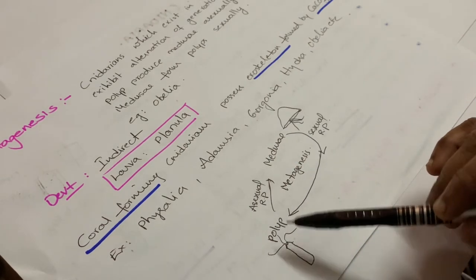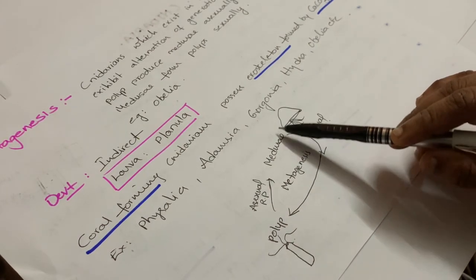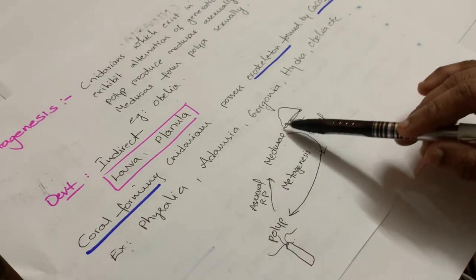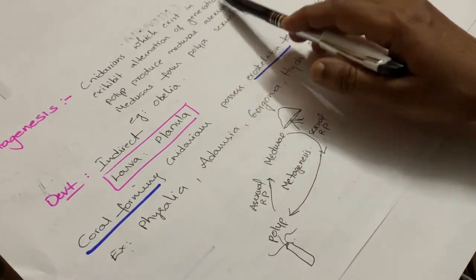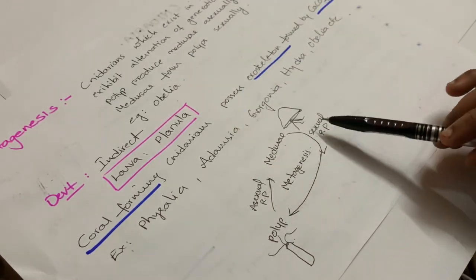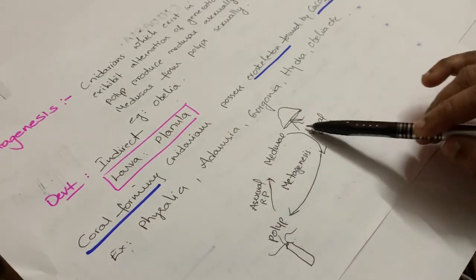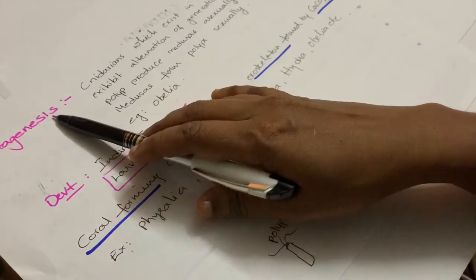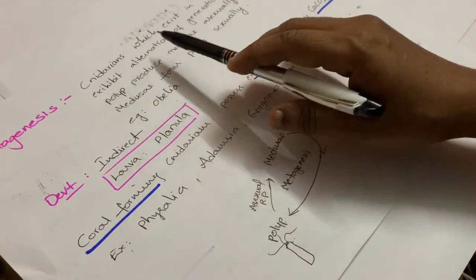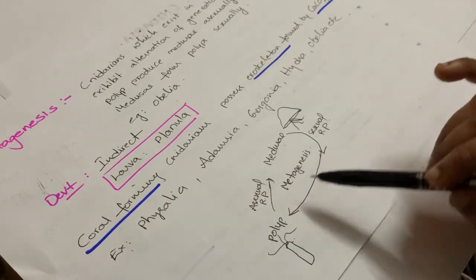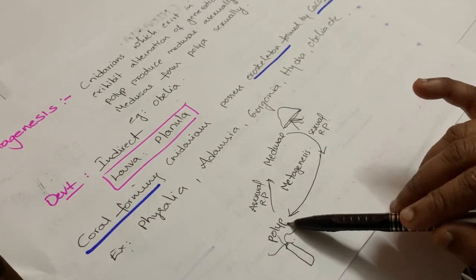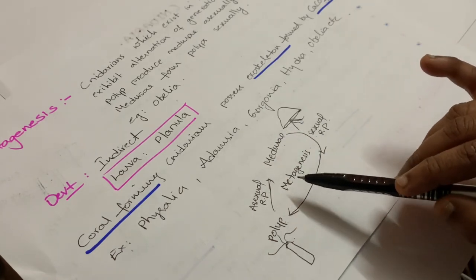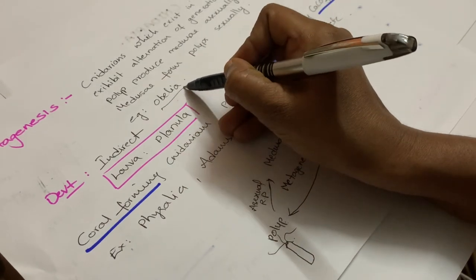Metagenesis: cnidarians consist of two body forms — polyp and medusoid. The polyp reproduces asexually and produces medusa; the medusa reproduces sexually and produces polyp. These two forms alternate with each other, which is known as metagenesis, or alternation of generation. An example is Obelia.